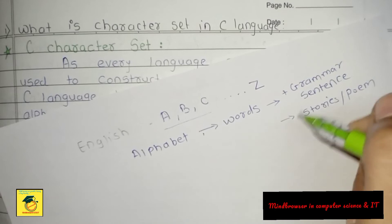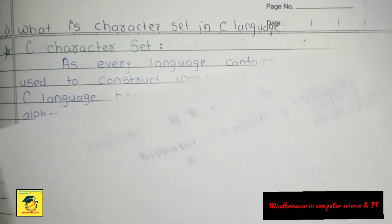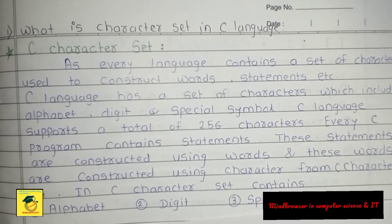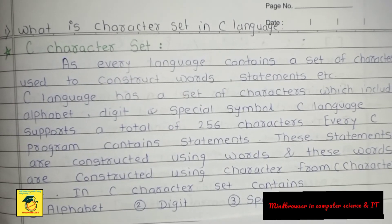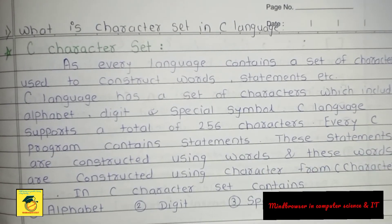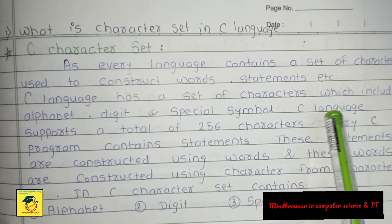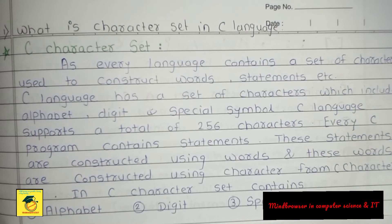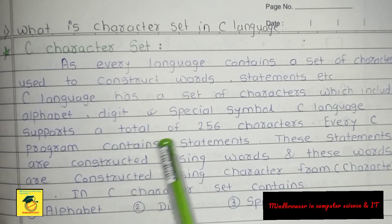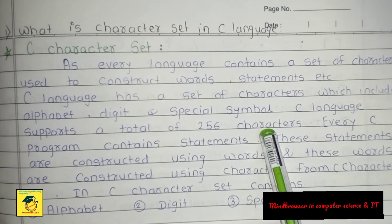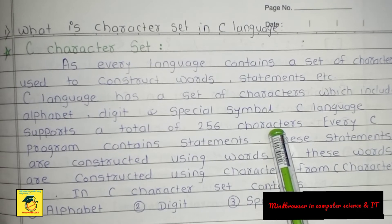The character set means basic alphabets, digits, and special symbols. C language supports a total of 256 characters. If we consider English, there are 26 alphabets, but C language supports 256 characters.